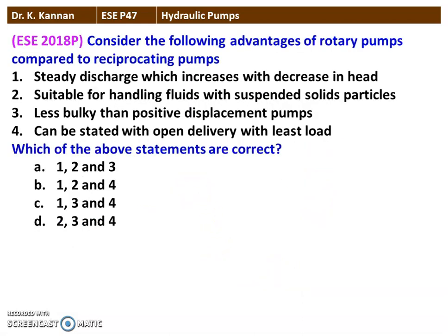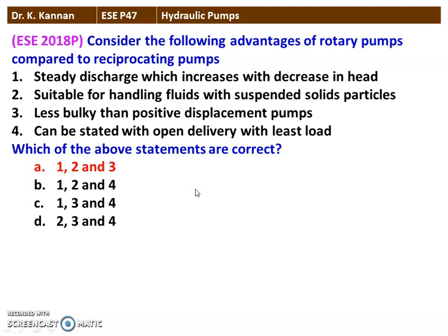The next question from the 2018 question paper: consider the following advantages of a rotary pump compared to a reciprocating pump — (1) steady discharge which increases with a decrease in head; (2) suitable for handling fluid with suspended solid particles; (3) less bulky than positive displacement pump; (4) can be started with open delivery with least load. Statements 1, 2, and 3 are correct advantages of the rotary pump compared to the reciprocating pump. The last statement is not correct.